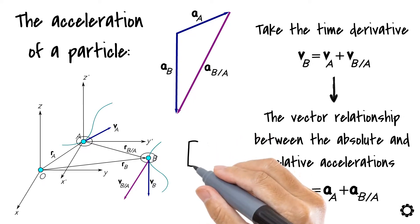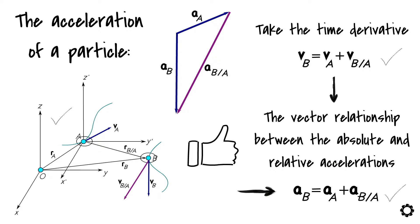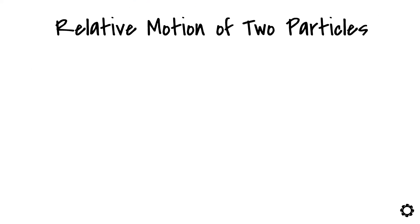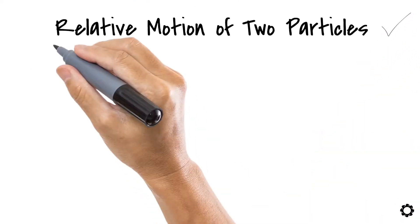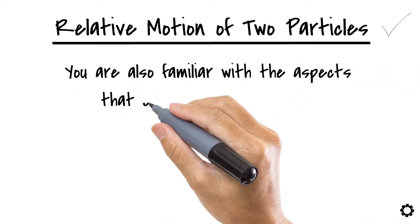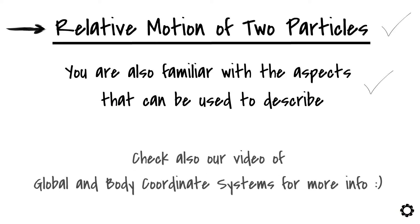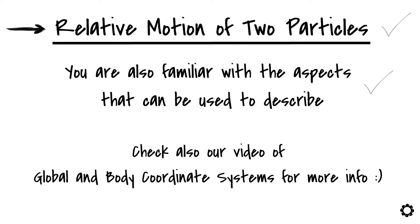There you have it. Now you know how the relative motion of two particles can be described and analyzed. Hopefully, by watching this video, you know the definition of the relative motion of two particles and you are also familiar with the aspects that can be used to describe this kind of motion. Thanks for watching and have a nice day.